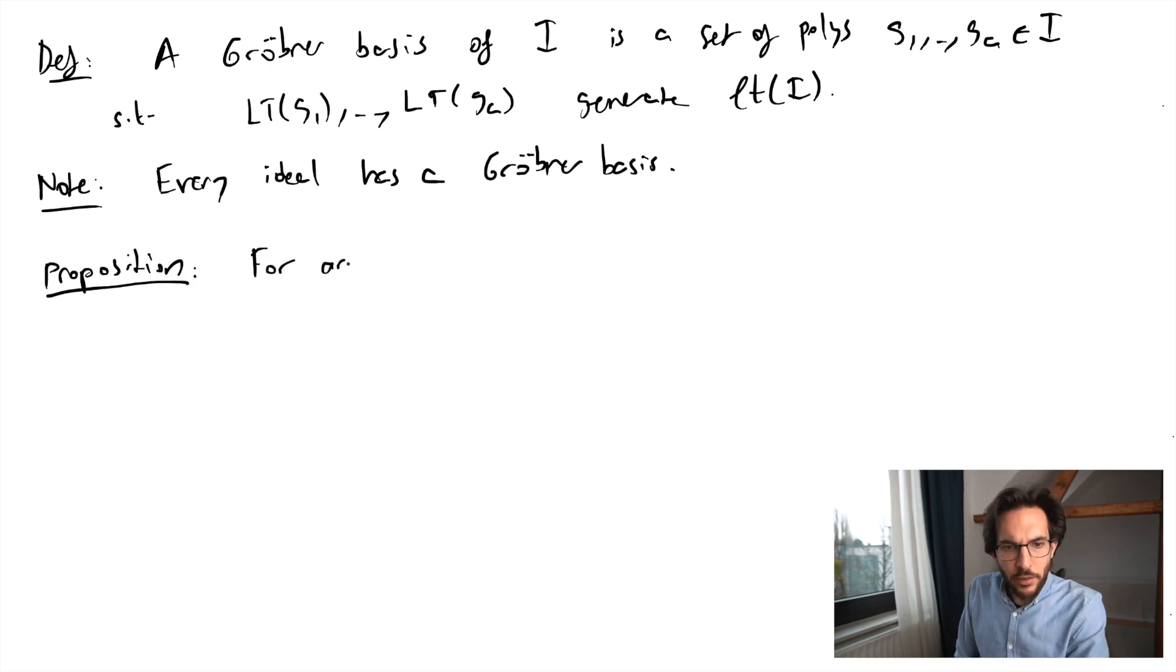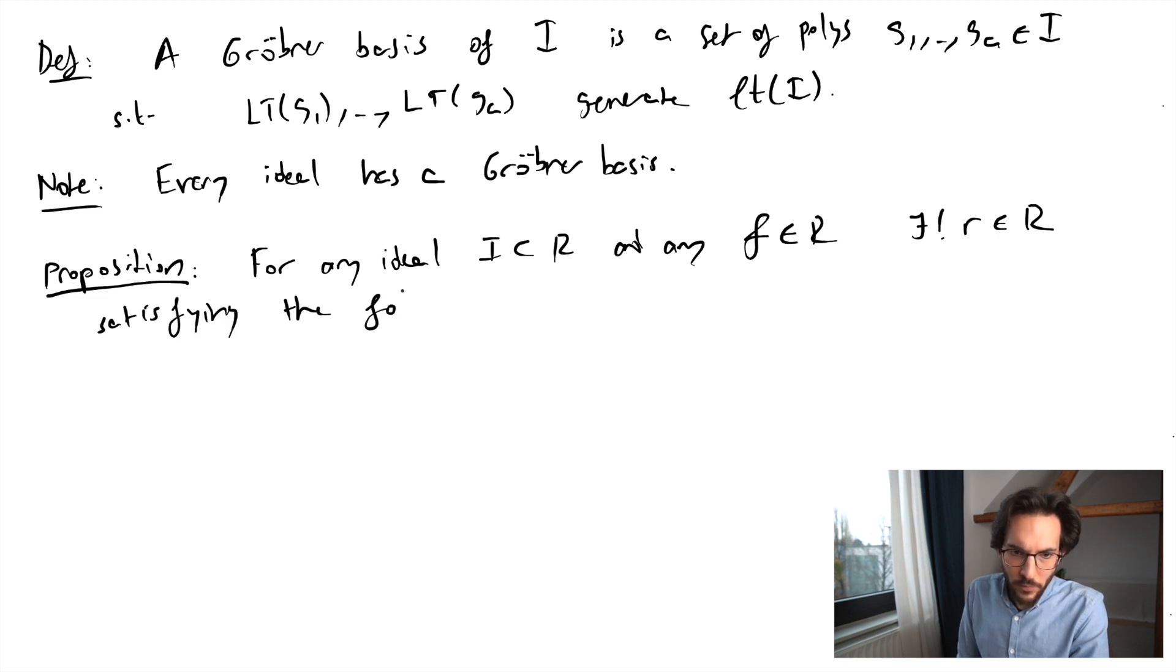We say that for any ideal and any polynomial in R, there exists unique R, a polynomial, that will serve as the remainder of f modulo i. And we say that it satisfies the following. So f minus R belongs to the ideal i. So that's half of what we expect for our remainder. And the second half says that no term of R belongs to the ideal of leading terms of i.